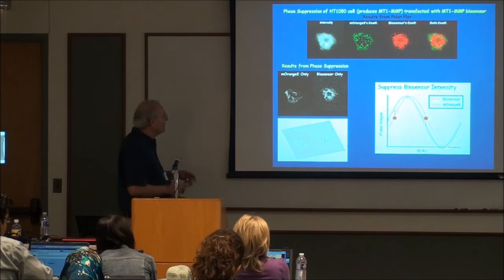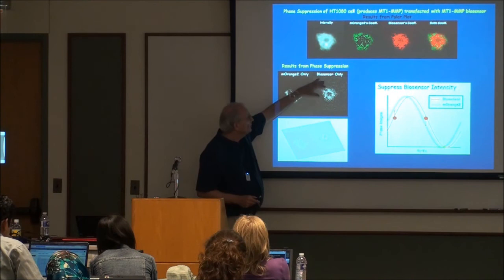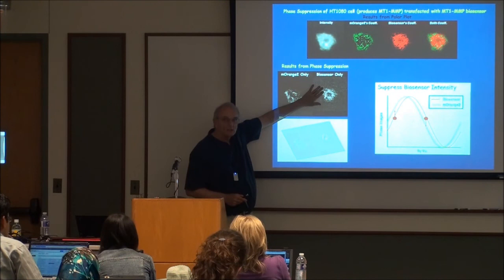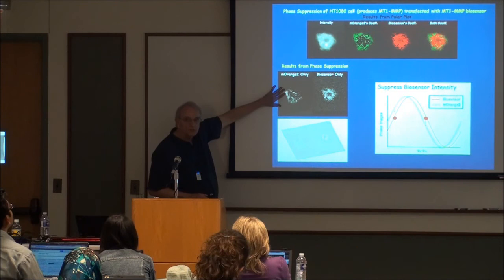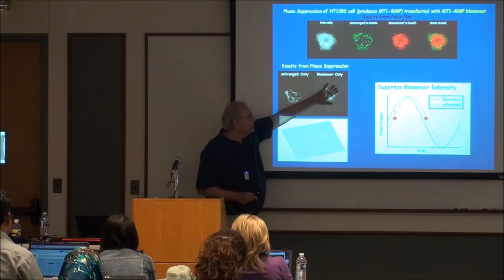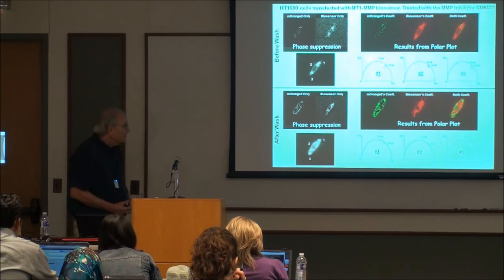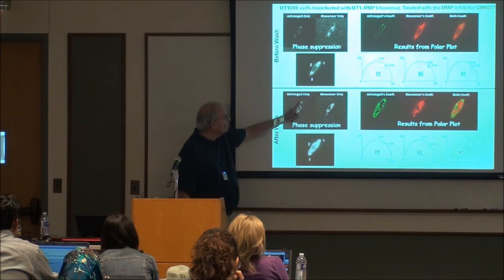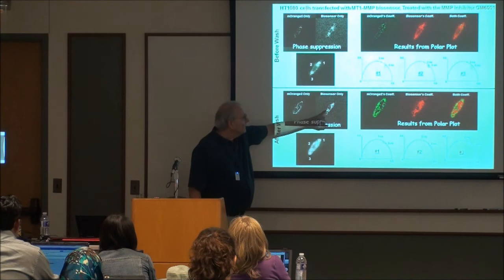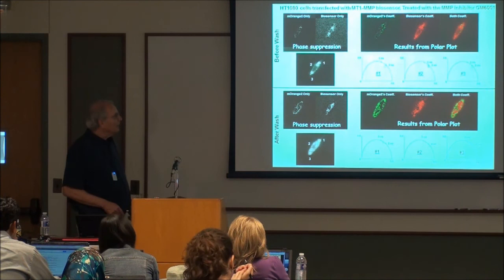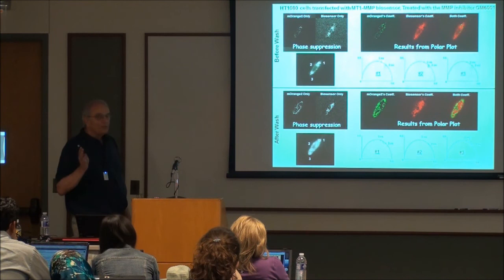With the metalloproteinase: using phase suppression, we phase suppress so we don't see the intact biosensor. The intact biosensor is all over the inside of the cell but hasn't reached the enzyme yet, so it's not split. On the other hand, looking at M-orange — which is just the donor after cleavage — the donor is on the outside of the cell. We can see the donor outside and the intact biosensor inside. We did that just by looking at different components and suppressing them with phase suppression. We compare with polar plots and see the donor lifetime on the outside where the enzyme has already reacted, and the intact biosensor lifetime on the inside.